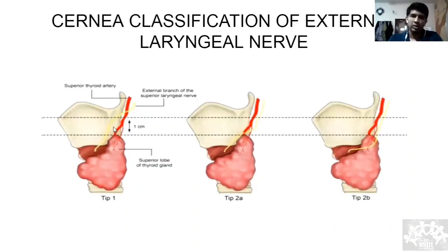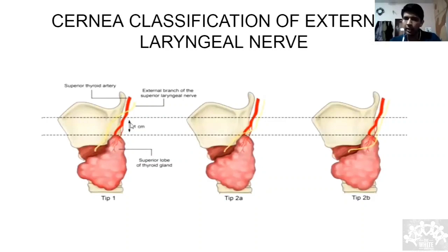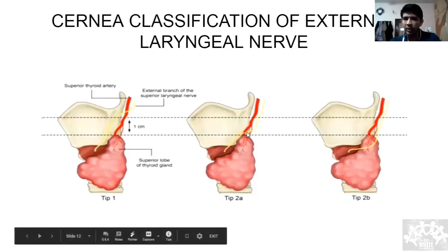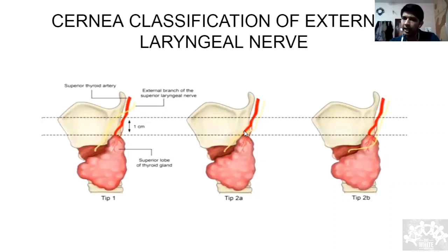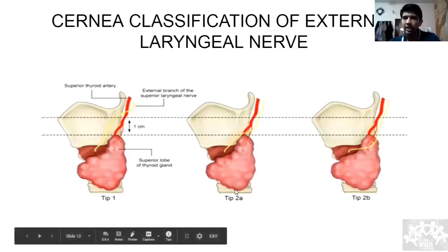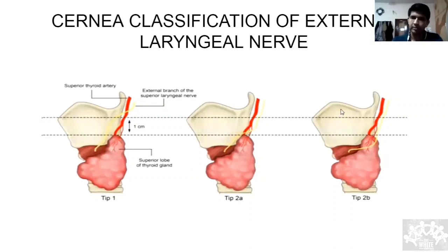What is Cernea classification? Draw a line at the superior pole of the thyroid, then draw another line one centimeter above that. The external laryngeal nerve crosses the superior thyroid artery at some point: if this crossing is above the upper line (more than 1 cm above the pole), it is Type 1. If it is within one centimeter of the superior pole, it is Type 2A. If it is below the superior pole, it is Type 2B. Type 2A is associated with the highest risk of nerve damage during thyroidectomy, because we normally ligate the pedicle just above the superior pole.